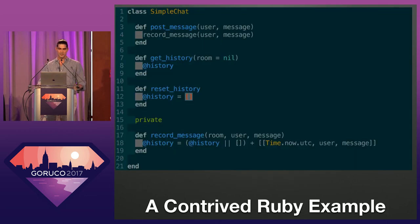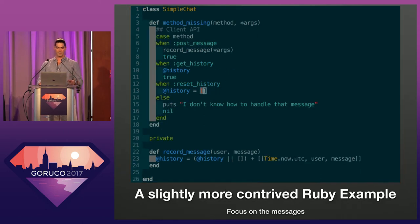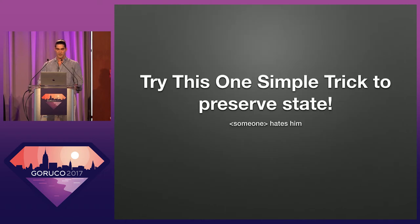I'm going to show you a really contrived Ruby example of a chat application. All you can do is post a message, get your full history, reset your history, and there's a private method that records the message with a timestamp. Here's a version of it that you would probably get upset if you found in a codebase, where I'm using method_missing to look a bit more like the Elixir code that's coming up and to put the emphasis on the messages we're receiving. We still have post message, get history, reset history, and the private method that timestamps things.